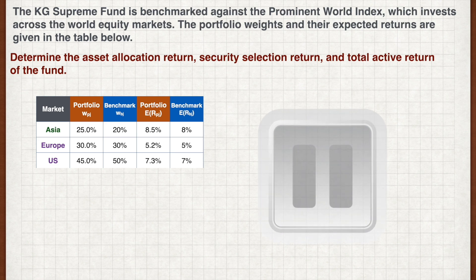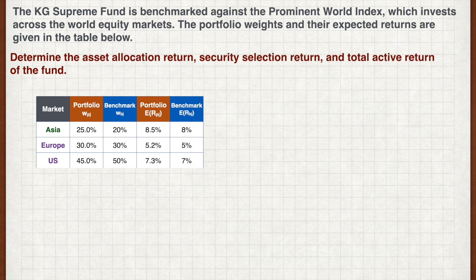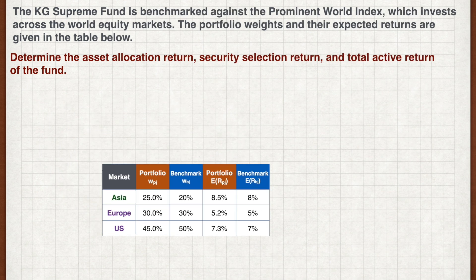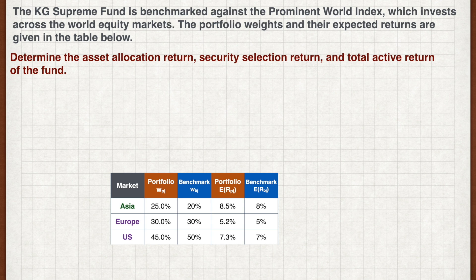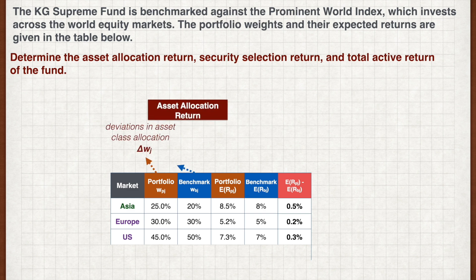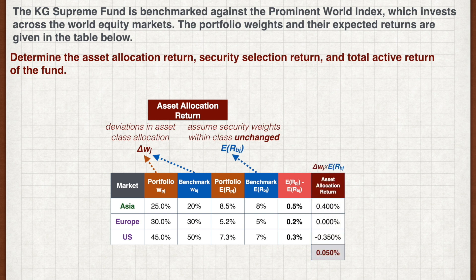Try not to memorize the formulas; instead, try to reason out how to calculate the respective returns. First, compute the active return for each asset class, which is simply the portfolio expected return minus the benchmark. Recall that the asset allocation return is solely based on deviations in asset class allocation, assuming that the security weights within each class are unchanged — meaning we take the benchmark return. The asset allocation return for each asset class is as follows, and the total asset allocation return is 0.05%.